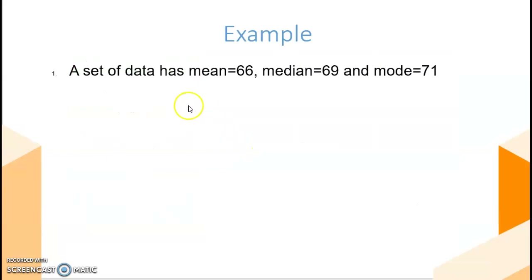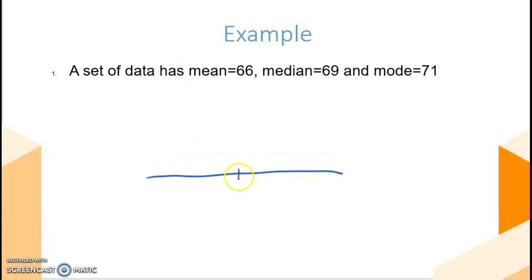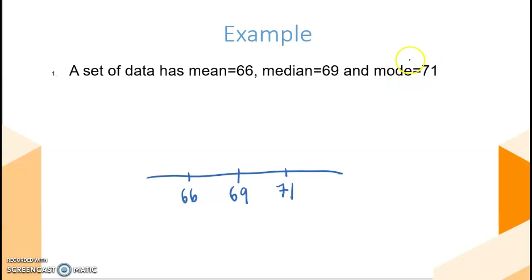When we look at an example: if a set of data has mean 66, median 69, and mode 71. Median is always at the middle, so here we have 69. Mean 66 will be here, and mode 71. We know that mode is the highest frequency, so the peak of the shape will be at 71.